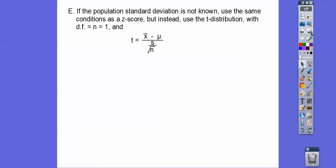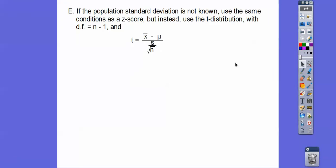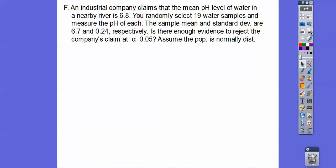So if the population standard deviation is not known, use the same conditions as the Z-score, but instead you're going to use a T-score distribution with degrees of freedom equal to N minus 1. Here's the formula: sample mean minus population mean, divided by S — the sample standard deviation — over the square root of N. Your calculator can do this, but you're going to have to show this on the test. You're going to have to know those formulas.